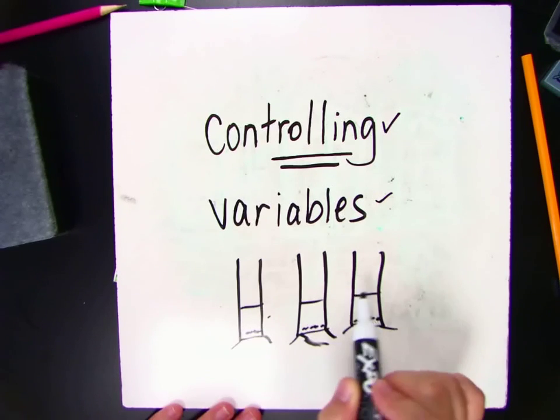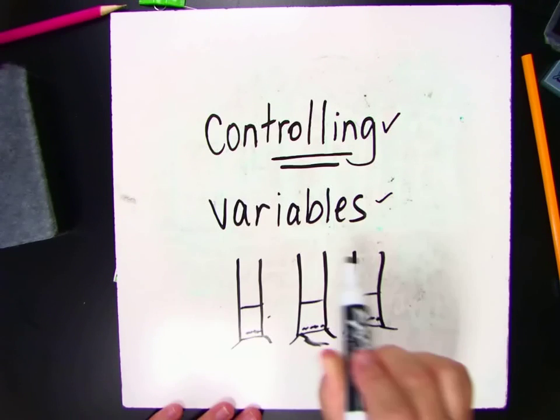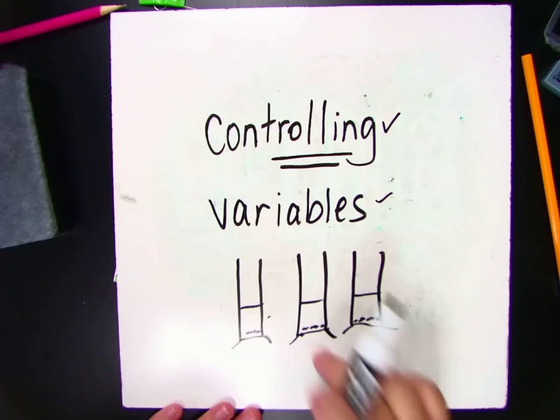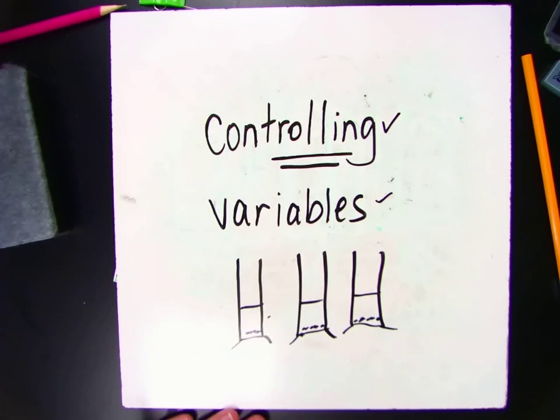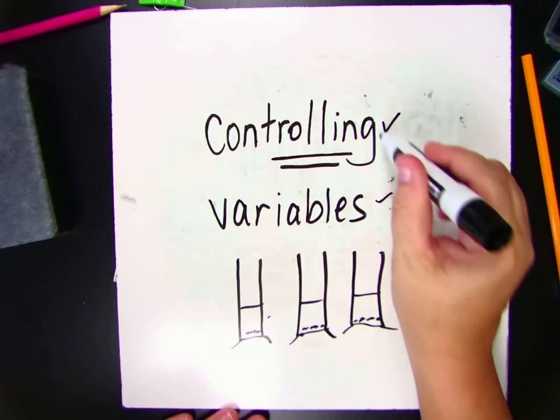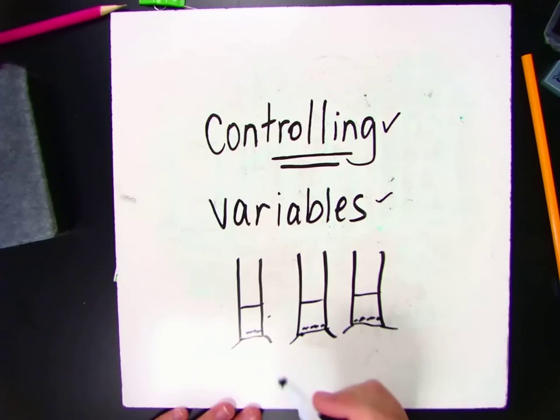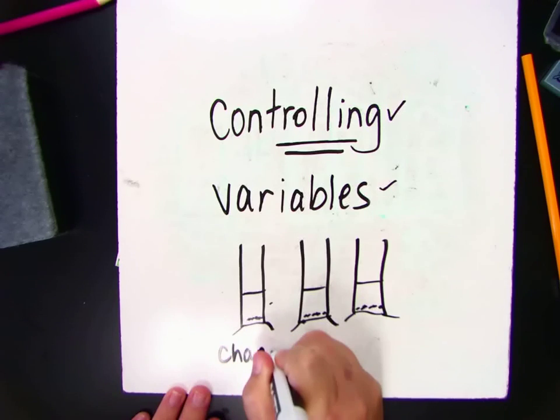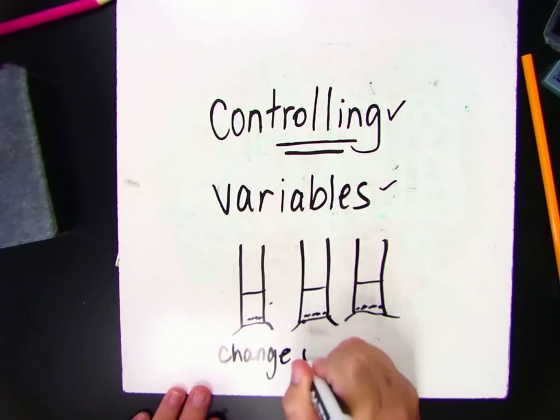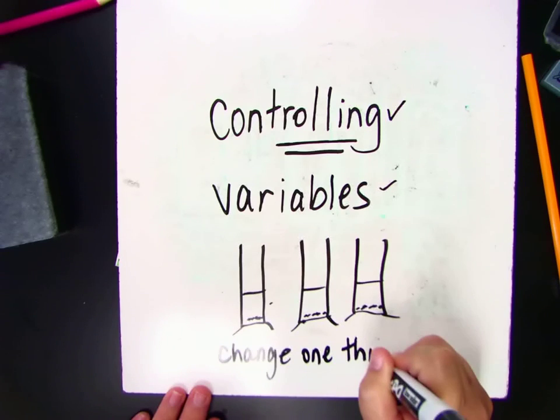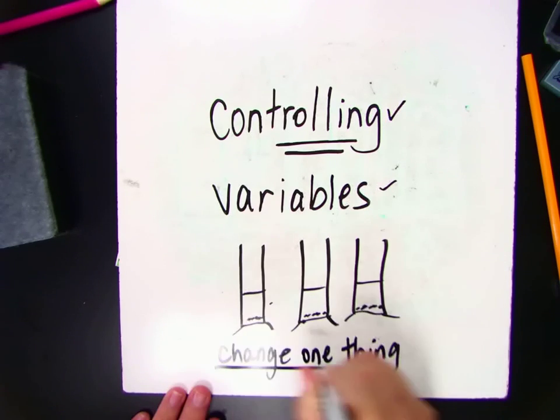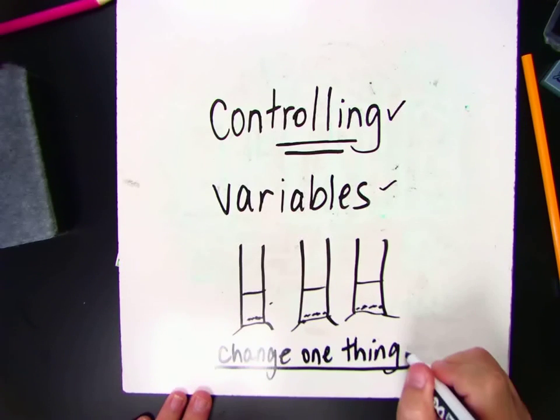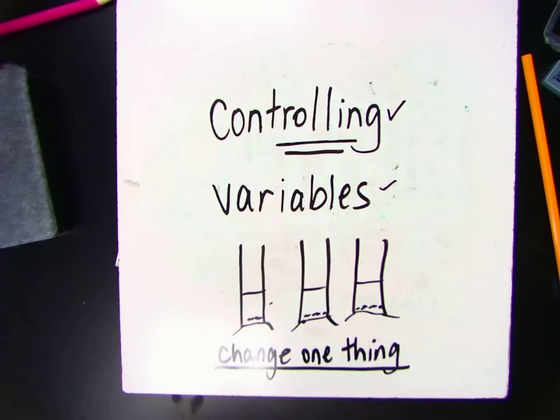What I want you to remember is that we made sure everything was the same or fair. But we wouldn't be able to find out the answer to anything. So what we need to do once we control our variables is we just change one of them. We change the thing that we want to find out.